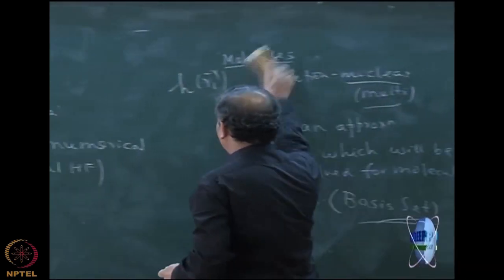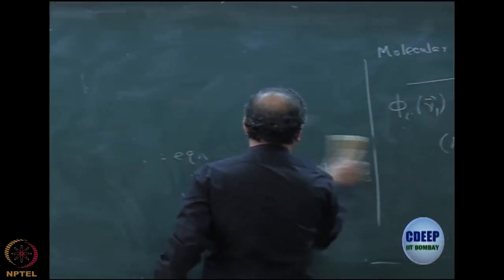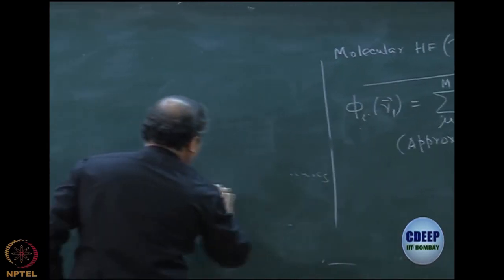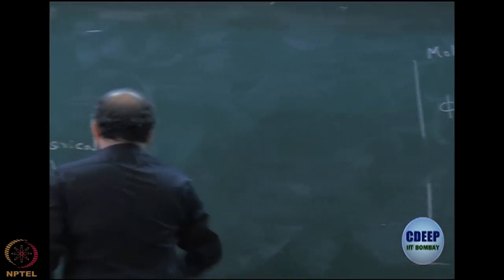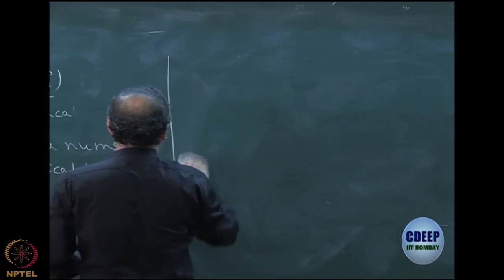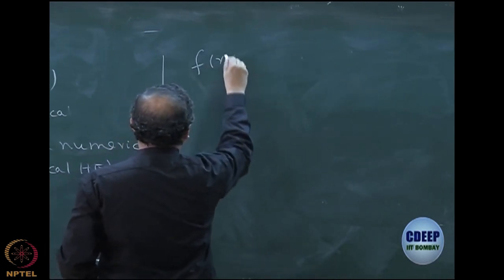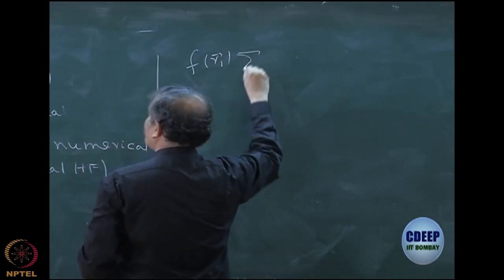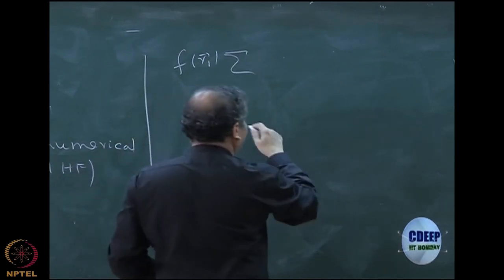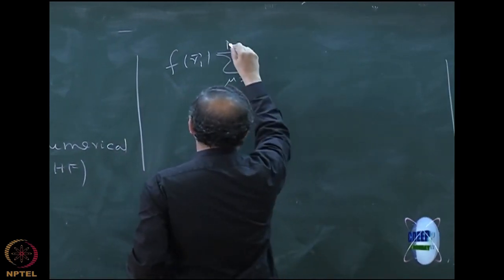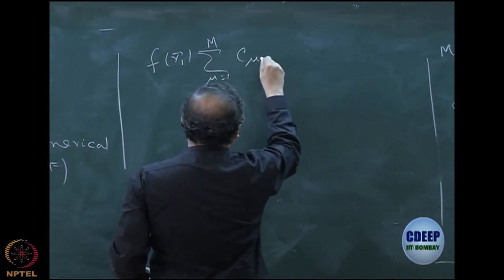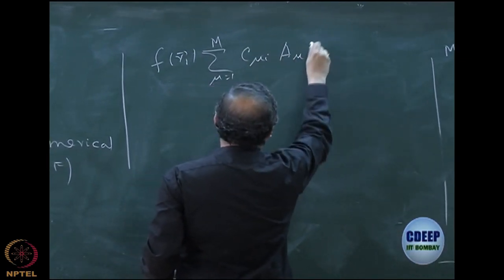But let us assume that I know a basis which is finite dimensional capital M. Then what can I do? So this is what Roothaan did. It is very simple mathematics which I can complete today. What Roothaan did was to substitute. Let us write this.